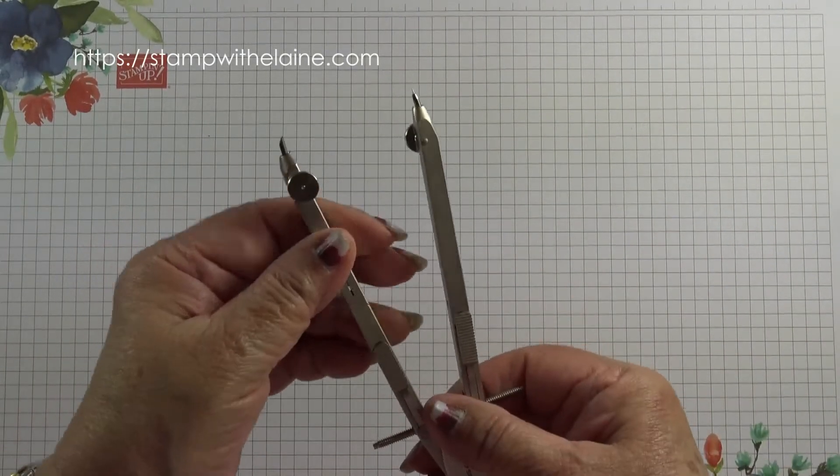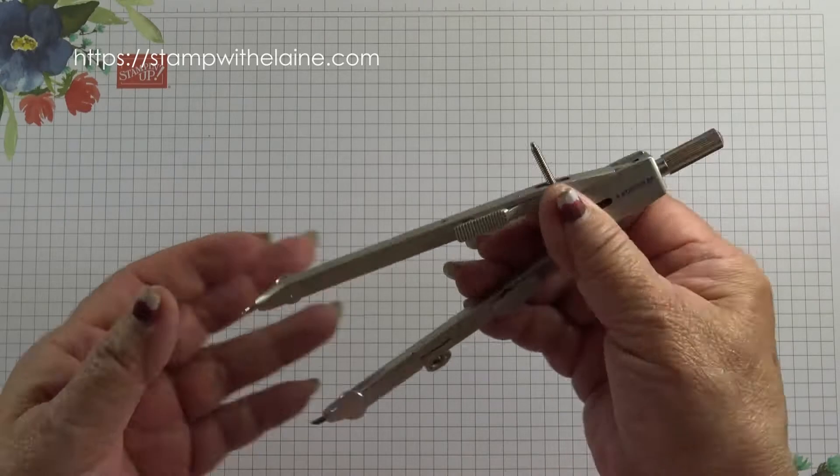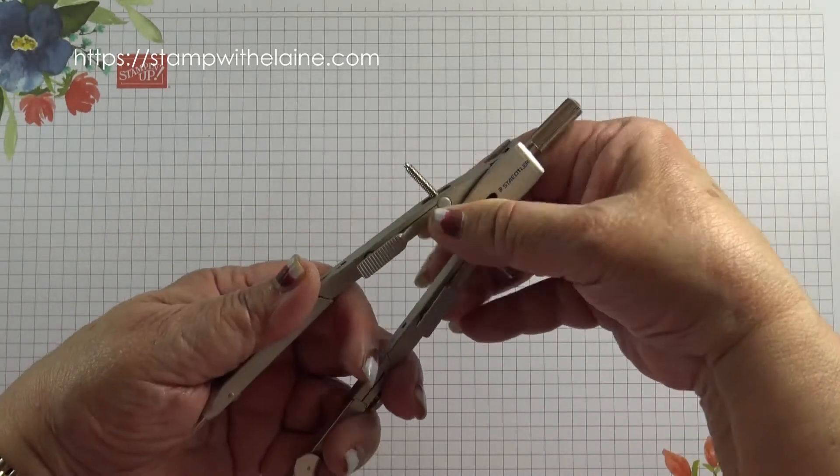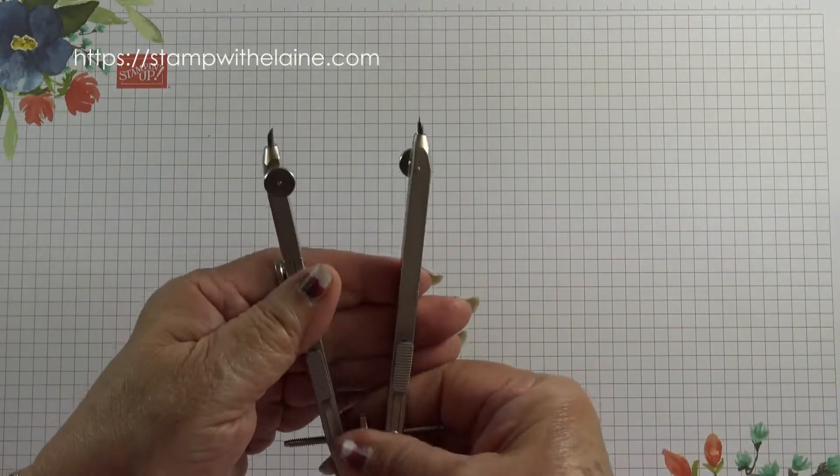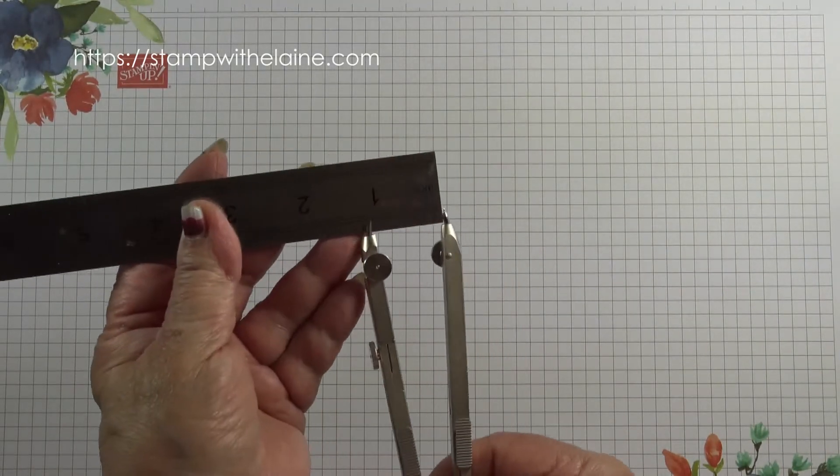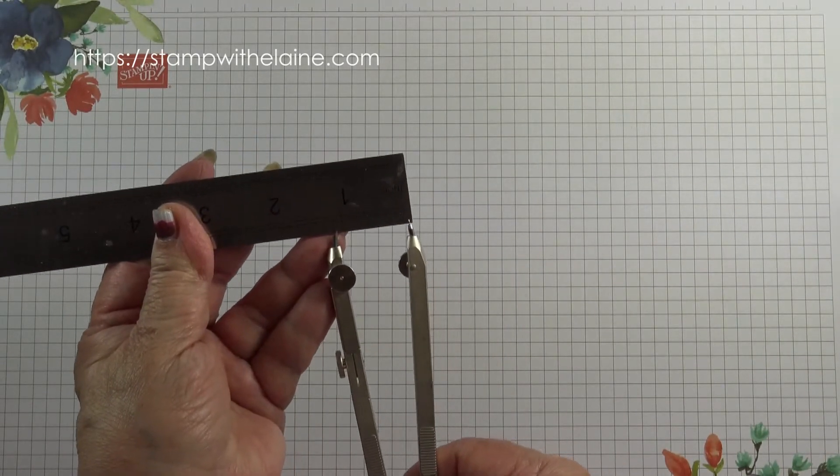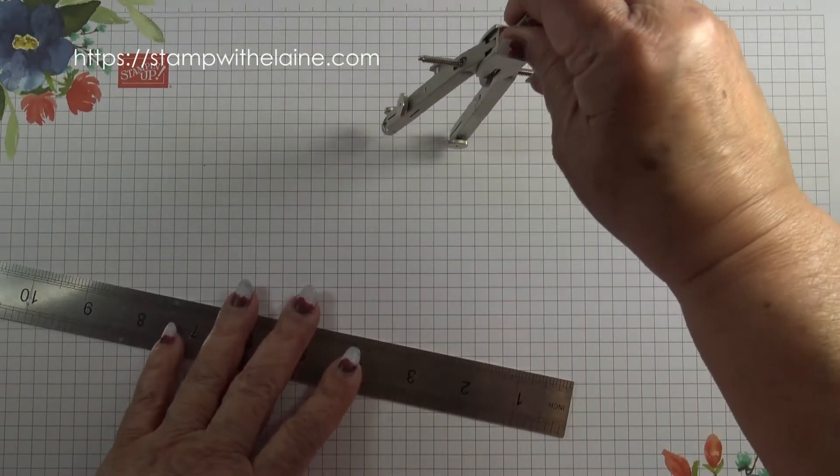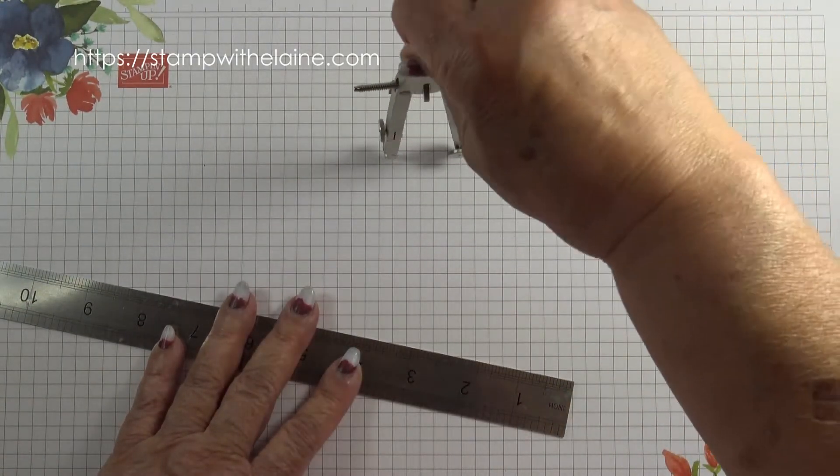And if you don't have anything that's the right size then you can use a compass. So the radius of the circle will be one and a quarter inches. Measure one and a quarter. And then draw round it like that.